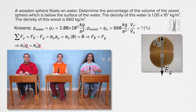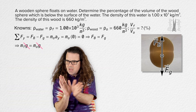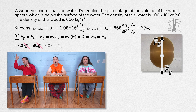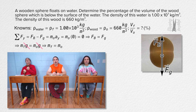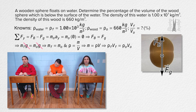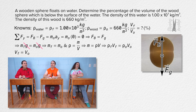Everybody brought acceleration due to gravity to the party, so we know the mass of the fluid displaced by the object equals the mass of the object. We also know density equals mass over volume, so mass equals density times volume. Substituting in, the density of the fluid displaced by the object times the volume of the fluid displaced by the object equals the density of the object times the volume of the object. And the volume of the fluid displaced by the object equals the volume of the object — however, the volume of the fluid displaced by the object and the volume of the object are only the same when the object is submerged in the fluid.